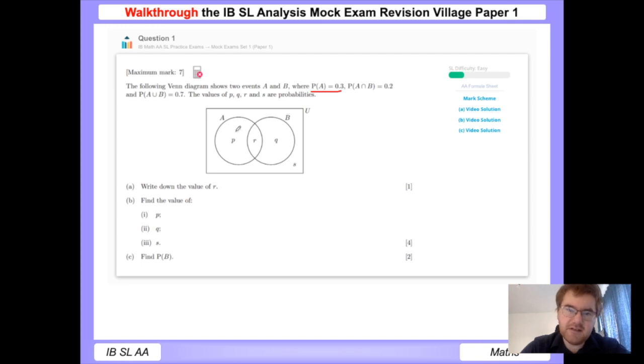The following Venn diagram shows two events A and B, where the probability of A is equal to 0.3, the probability of A and B, or the intersection of A and B, is 0.2, which is the middle part, and then the probability of A union B is equal to 0.7, which is all the circles together. We need to work out the various different letters here: p, q, r, and s.